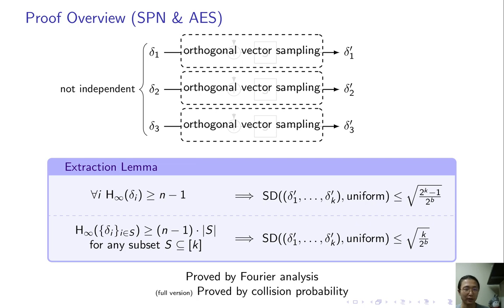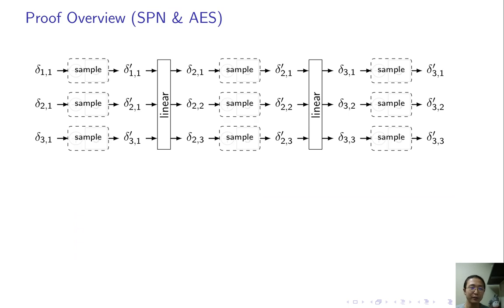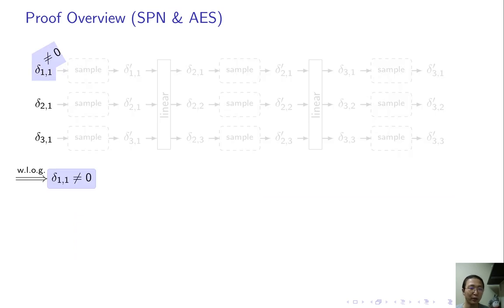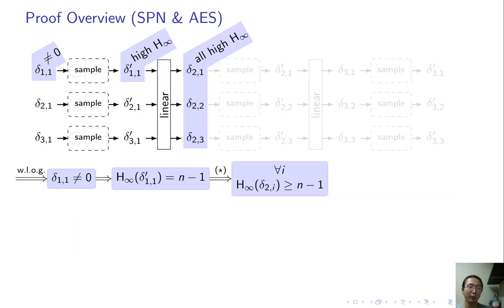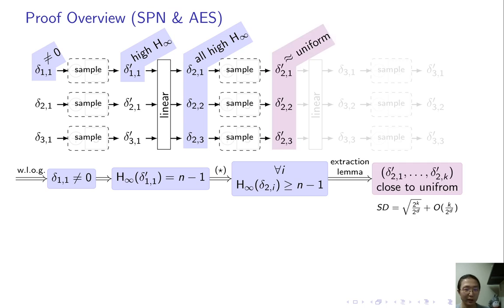Now we are ready to show the main result. So here is a SPN. As we just discussed, all the S-boxes can be replaced by subspace sampling. The input difference is non-zero somewhere. Then subspace sampling gives you high entropy. The linear function will propagate the entropy to all blocks. Here star means the linear function has to satisfy a property that all of its coefficients are non-zero. In particular, this is not satisfied by AES. Let's say the entropy is propagated to all blocks. Then we can apply extraction lemma. As the condition is satisfied, remember, the only thing we need is that each input block individually has high entropy. Therefore, two round SPN is close to two wise independent.